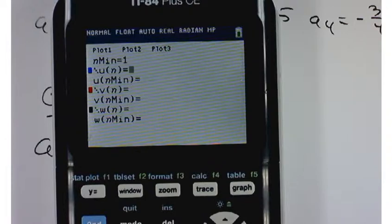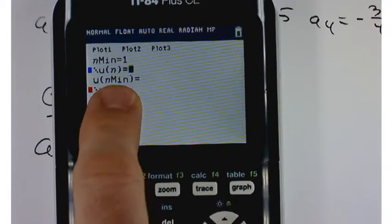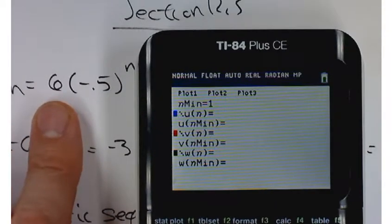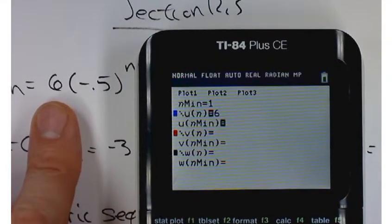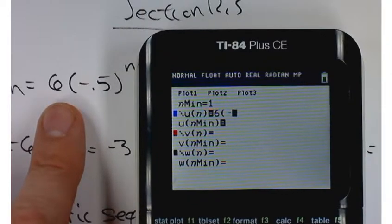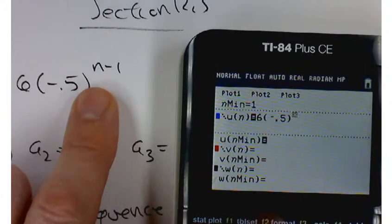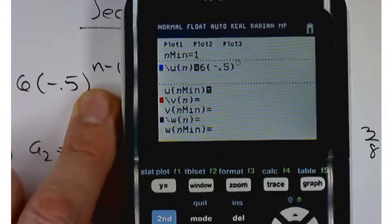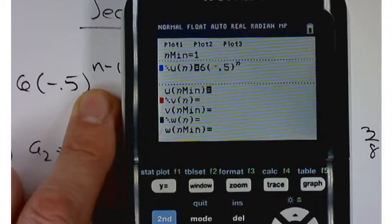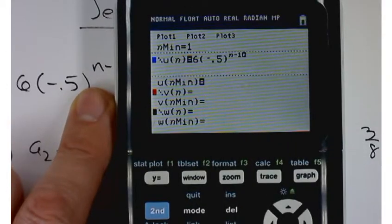So it's asking you for the general term in your sequence. So that general term is this one right here. It's six parentheses negative 0.5 parentheses raised to the n minus 1 power. Now, where's n? Well, because we're in sequence mode, when you type the X key, instead of getting the X, you're actually going to get an n minus 1 like that.